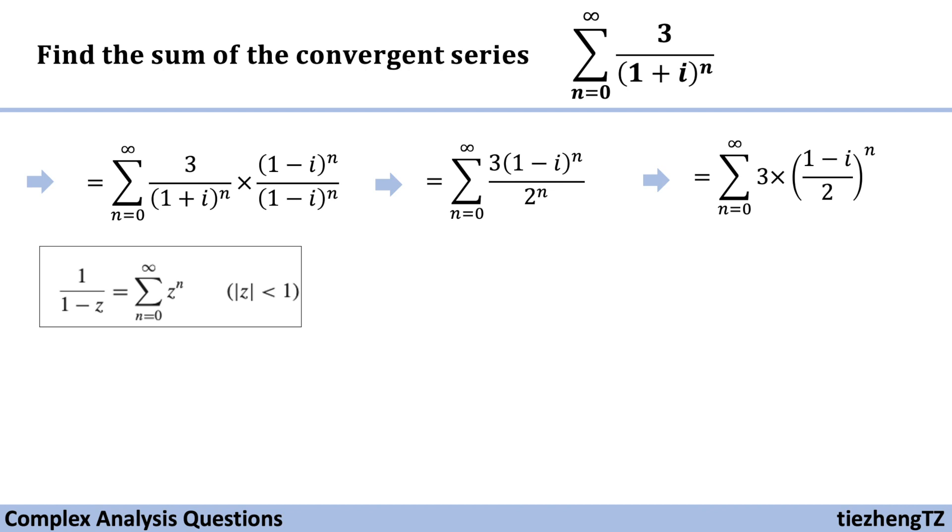The known Laurent series form, right? And we know in this case, the z is (1 - i) over 2.